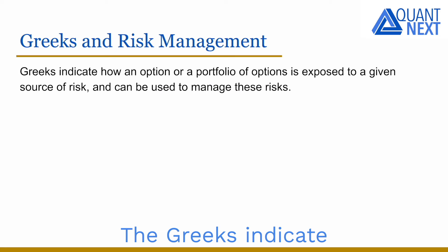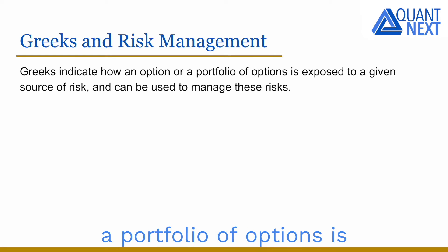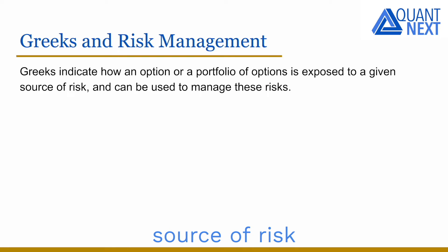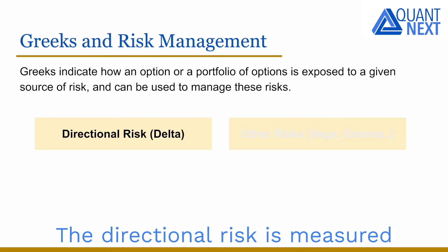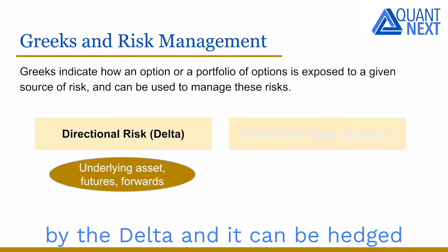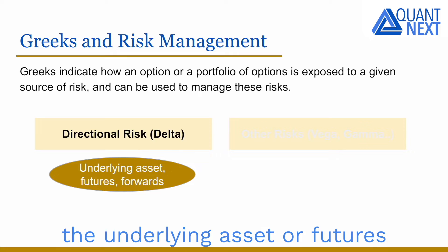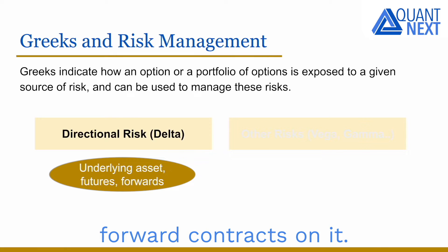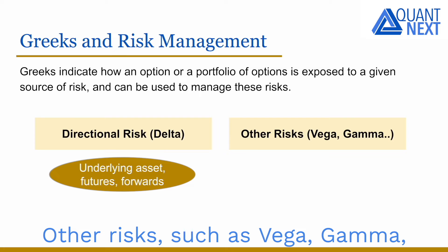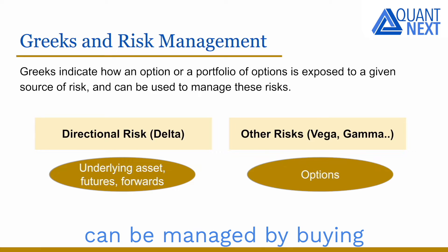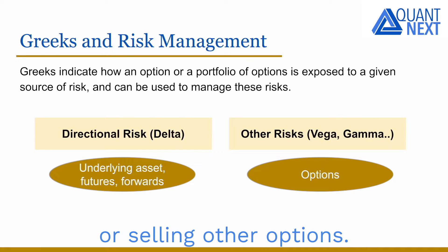The Greeks indicate how an option or a portfolio of options is exposed to a given source of risk, and they can be used to manage this risk. The directional risk is measured by the delta and it can be hedged by purchasing or selling the underlying asset or future forward contracts on it. Other risks, such as Vega and Gamma, can be managed by buying or selling other options.